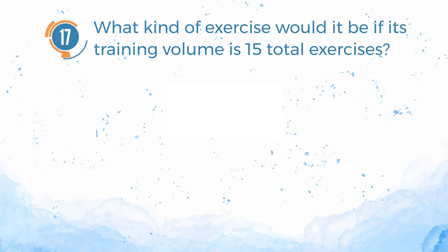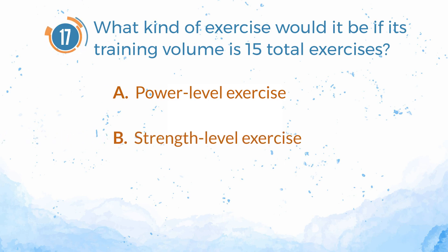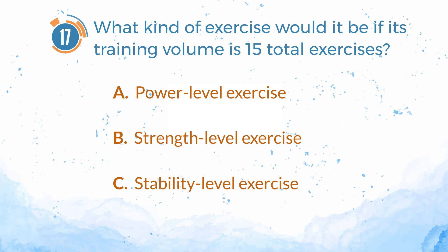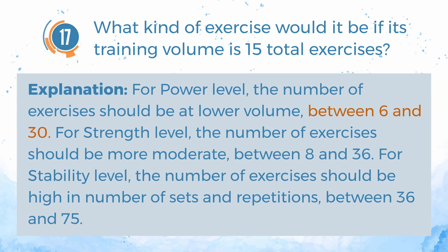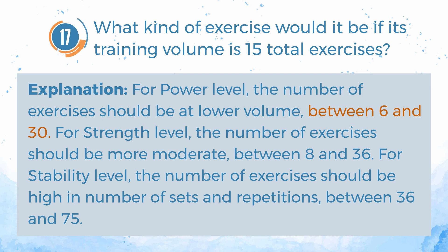Number 17. What kind of exercise would it be if its training volume is 15 total exercises? A. Power level exercise. B. Strength level exercise. C. Stability level exercise. The answer is A. Power level exercise. Explanation: For power level, the number of exercises should be at lower volume between 6 and 30. For strength level, the number of exercises should be more moderate, between 8 and 36. For stability level, the number of exercises should be high, between 36 and 75.